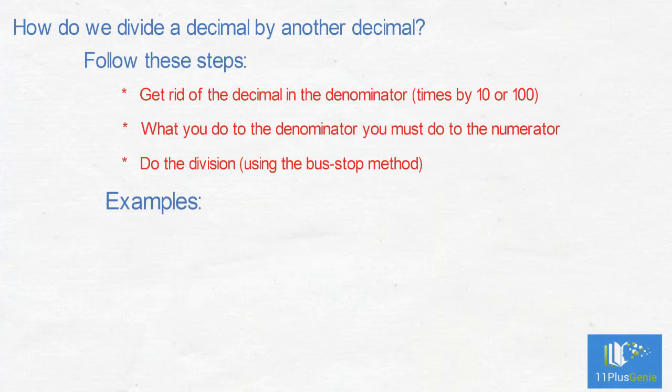Examples. We need to get rid of the decimal in the denominator. To do that, we times 0.4 by 10, which gives us 4. What we do to the denominator, we must do to the numerator. 1.84 times 10 is 18.4.